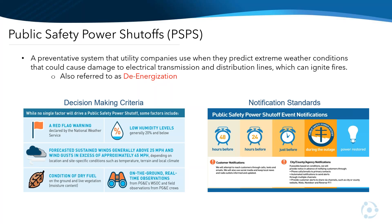Some of the guidelines include forcing utilities to create education and outreach campaigns, work with first responders, develop notification and communication protocols for alerting customers, and generate reports following each public safety power shutoff event.